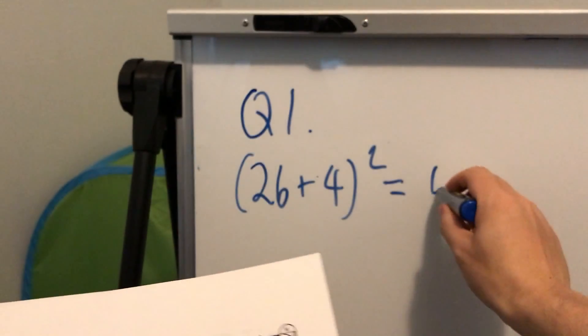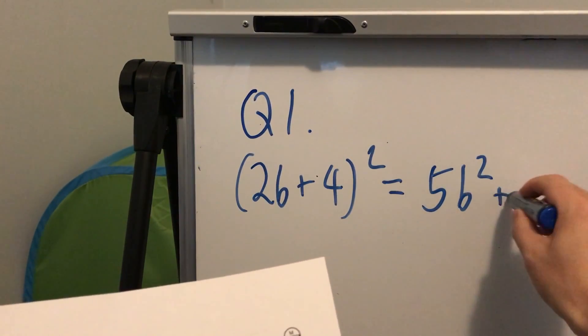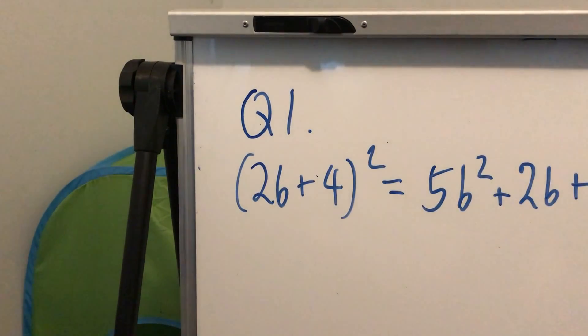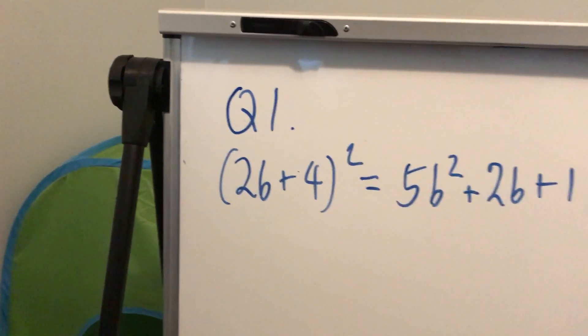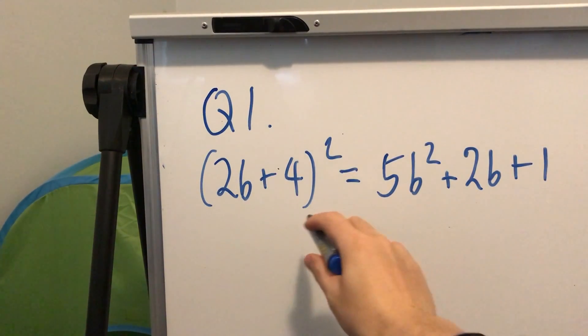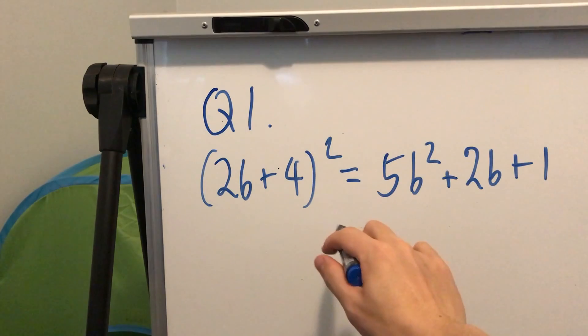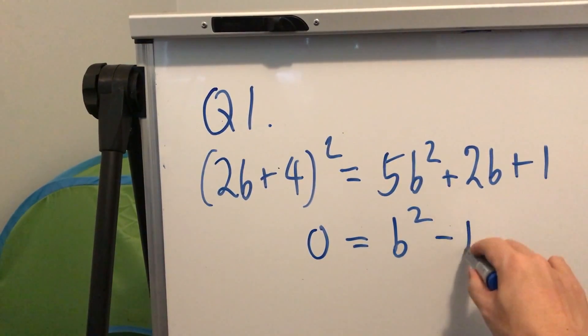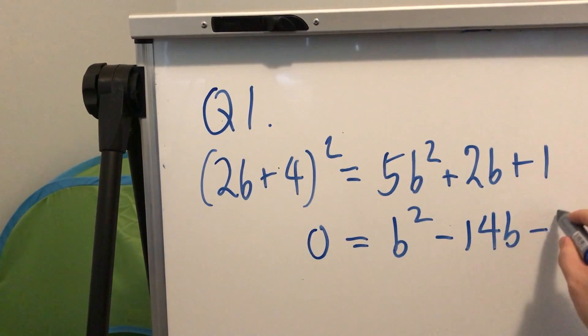That's what it means to be base B. So you expand this, you can simplify, you get 0 equals B squared minus 14B minus 15.